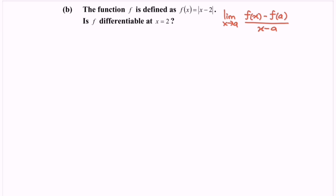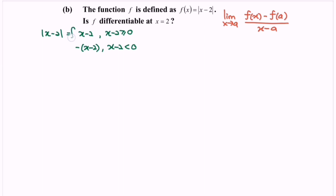Next, we focus on the definition of the absolute value |x - 2|. It equals x minus 2 when x - 2 ≥ 0, and equals negative (x - 2) when x - 2 < 0. Rewriting: |x - 2| = x - 2 for x ≥ 2, and |x - 2| = -(x - 2) for x < 2. Kindly illustrate this on a number line.